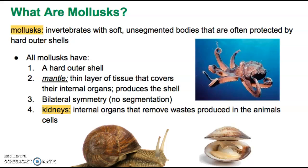All mollusks are invertebrates, meaning they don't have a backbone or a spinal cord like you and I. They do, however, have soft bodies that are protected by hard outer shells. Our segmented worms from chapter one also had soft bodies, but those soft bodies were segmented, meaning repeated body patterns occurring over and over within the same organism. Mollusks don't have this segmentation, which sets them apart from segmented worms.